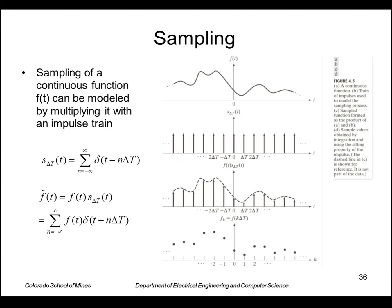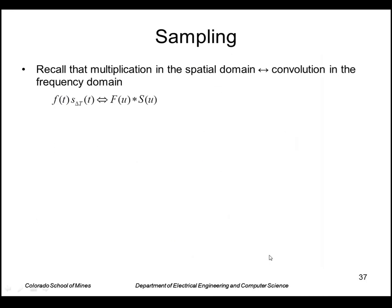So recall that a comb function is a series of impulses like this separated at delta t. So multiplying this times the continuous function basically just sifts out or picks off the values of f at these points. So I get a series of samples like this.